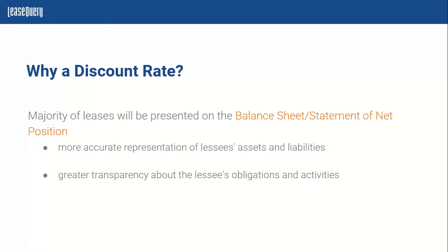Essentially, when you do transition to ASC 842 or IFRS 16, if you've already transitioned, or GASB 87 going forward, all of your leases are now going to be presented on the balance sheet, or the majority of your leases. We may be excluding some scoped-out items like short-term leases or immaterial low-value assets. So the majority of your leases will be presented on the balance sheet or the statement of net positions.